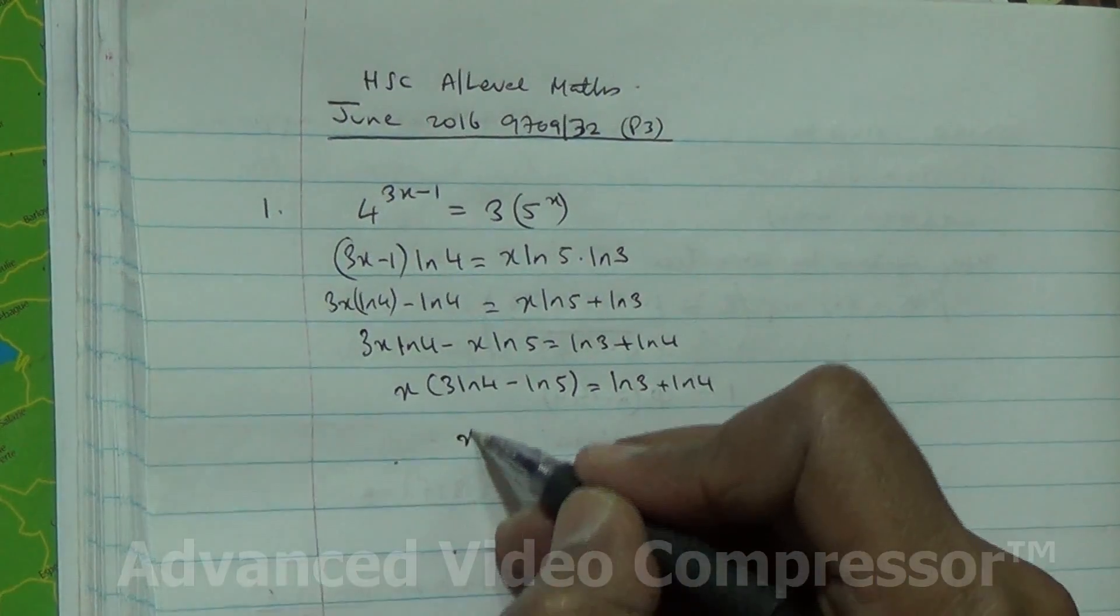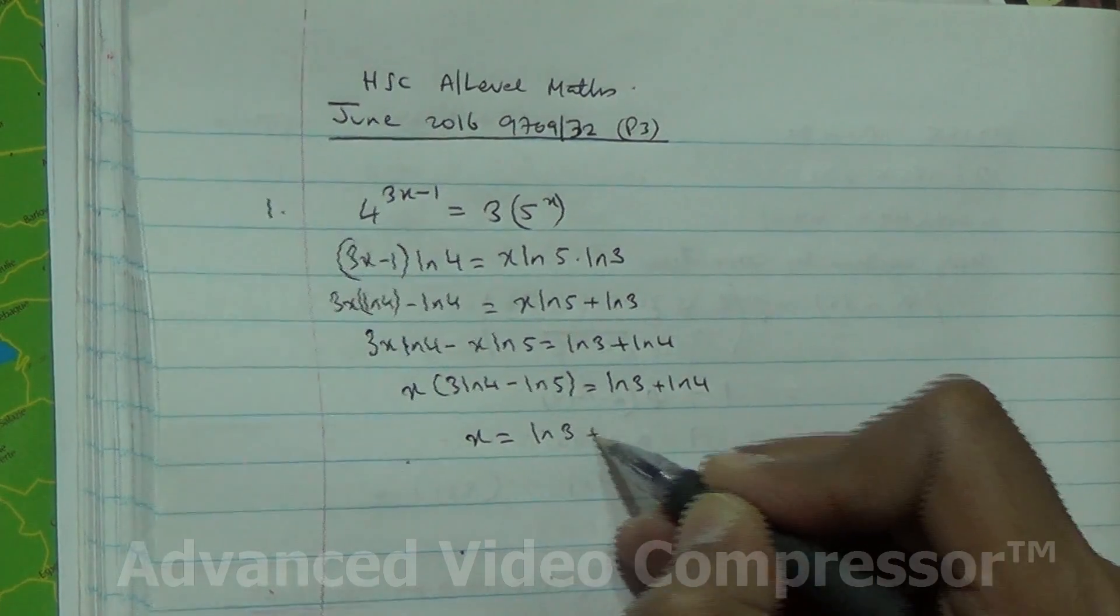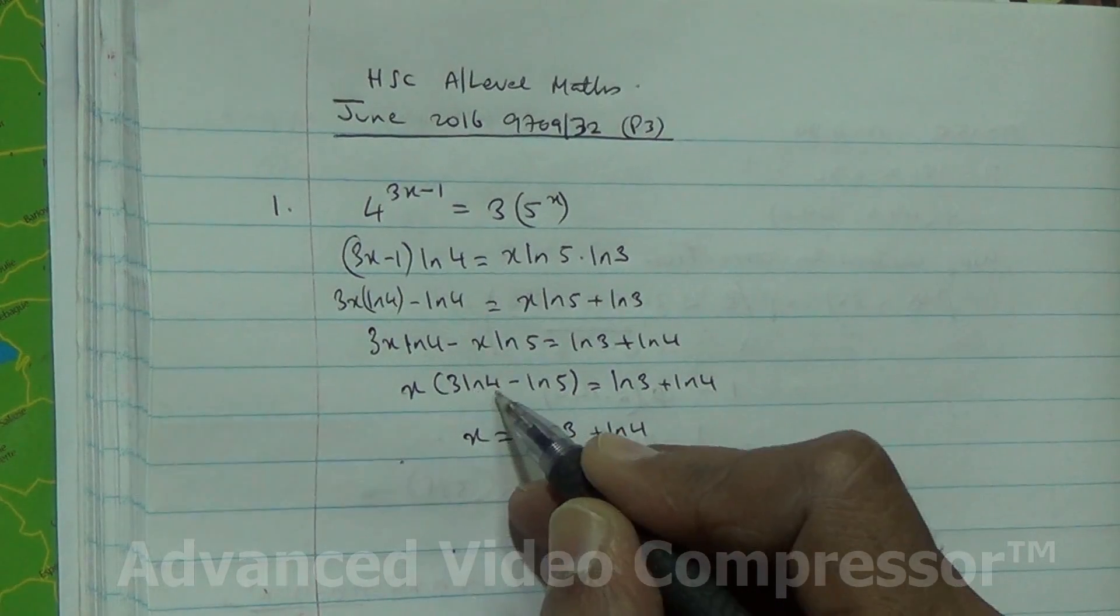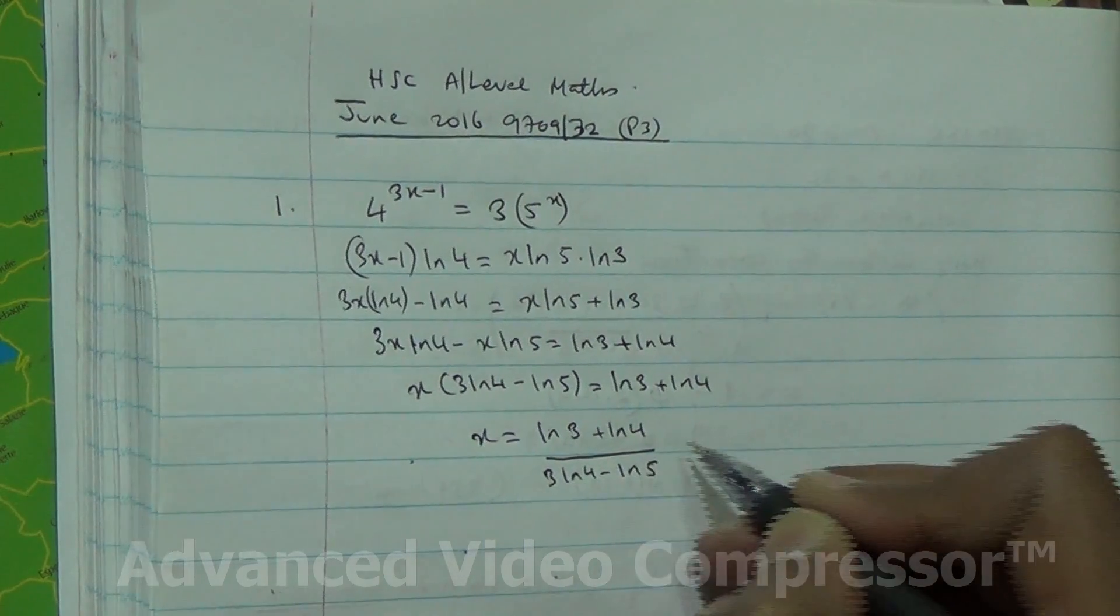Now from here, x can be easily solved: ln 3 plus ln 4, all divided by 3 ln 4 minus ln 5.